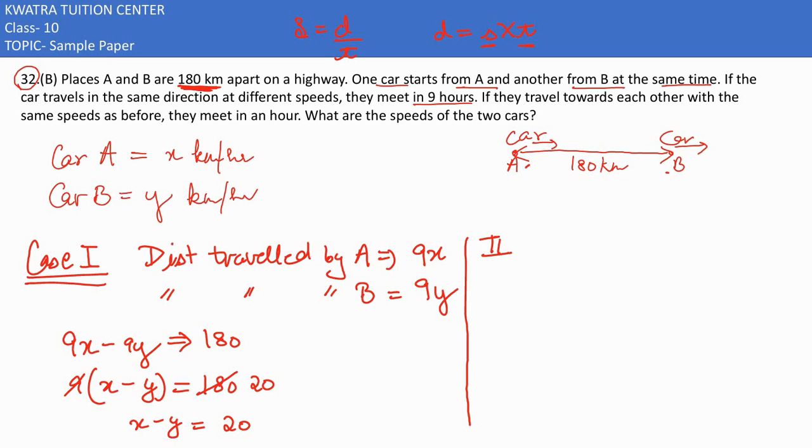Now in the second situation, if they travel towards each other with the same speed as before, they meet in an hour. So we need to find distance traveled by A, which is 1 times x, because time is 1 and speed is x. And distance traveled by B is 1 times y.